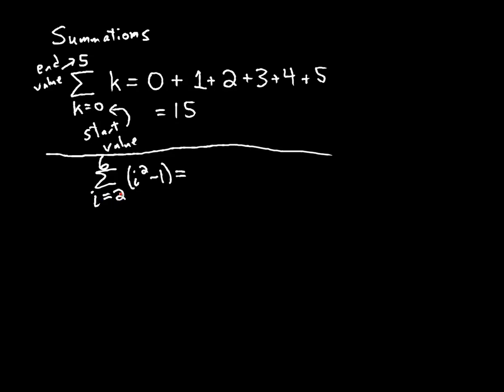So I start at 2. 2 squared minus 1 is 3. And then my next term is 3 squared minus 1, that's 8. 4 squared minus 1 is 15. 5 squared minus 1 is 24. And 6 squared minus 1 is 35. So we get 3 plus 8 plus 15 plus 24 plus 35. And if you add that up, that would be 11 plus 15 is 26, 50, 85.